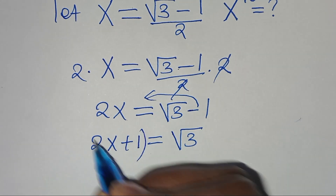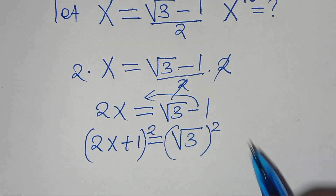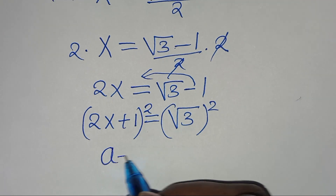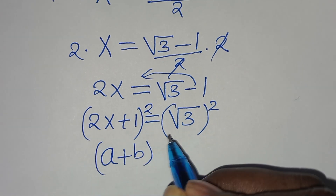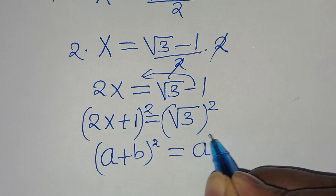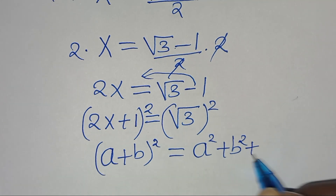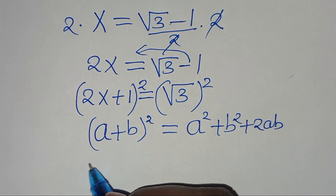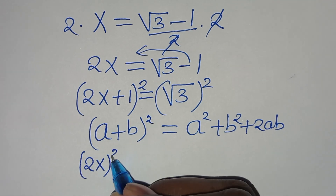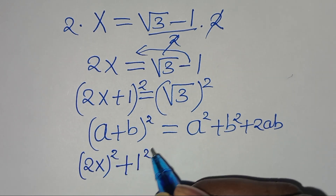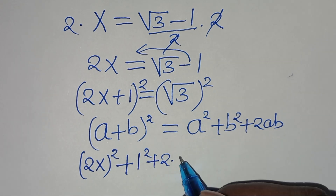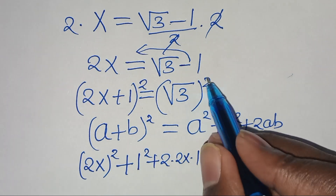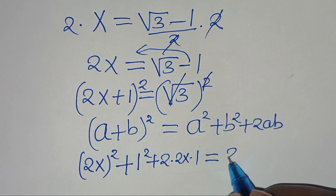The next step is to square both sides, so that 2x plus 1 raised to the power of 2 is in the form of a plus b raised to the power of 2, which we can express as a squared plus 2ab plus b squared. Applying this algebraic identity, we have 2x raised to the power of 2, plus 1 squared, plus 2 times 2x times 1, equal to square root of 3 raised to the power of 2. We eliminate the square root, so this is equal to 3.